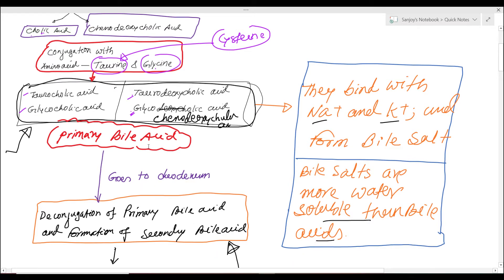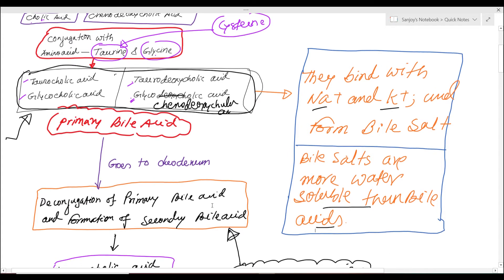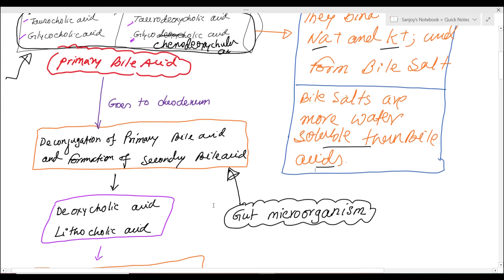These primary bile acids along with their bile salts go to the duodenum through the common bile duct. In the duodenum, these primary bile acids and bile salts become deconjugated by the action of gut organisms and form secondary bile acids.